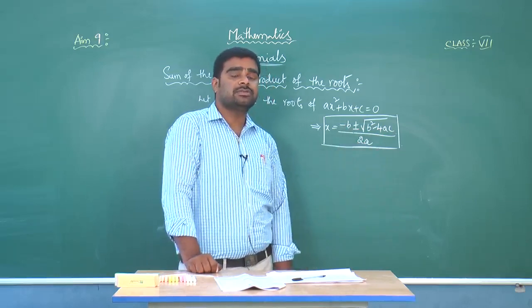So this equals (minus B whole square minus square root of B squared minus 4AC whole square) by 4A squared. Simplifying: minus B squared gives B squared, and the square root and square cancel, leaving B squared minus (B squared minus 4AC) by 4A squared. B squared and B squared cancel, leaving 4AC by 4A squared, and 4A cancels to give C by A.